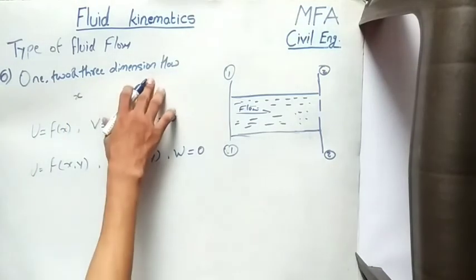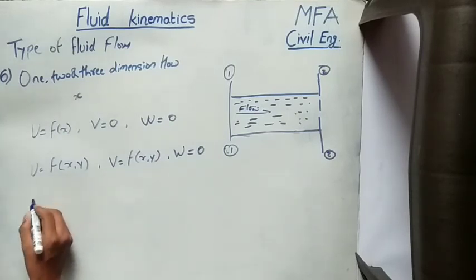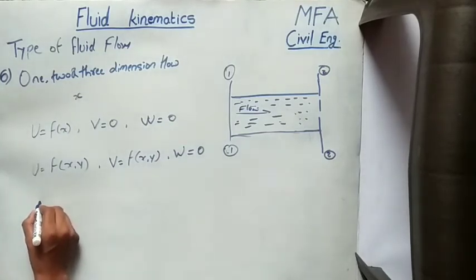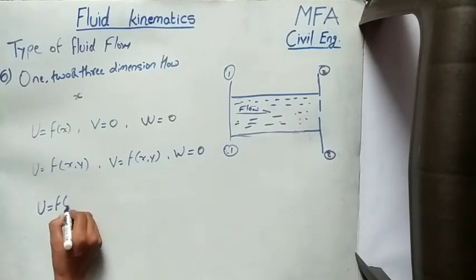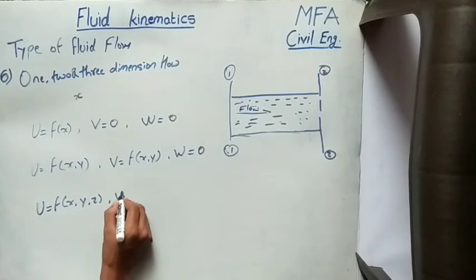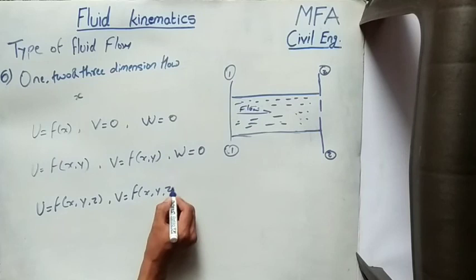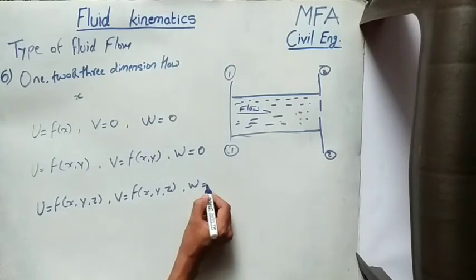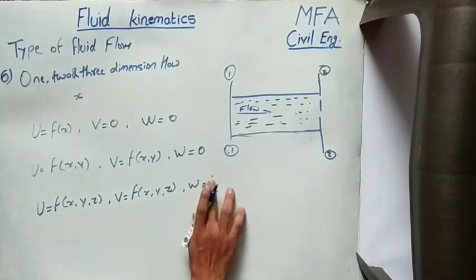In the case of three-dimensional flow, the velocity is a function of time and three coordinates. Mathematically, u equals a function of x, y, and z. Similarly, the velocity components in the other two directions are also functions of x, y, and z.